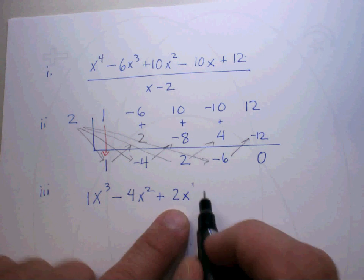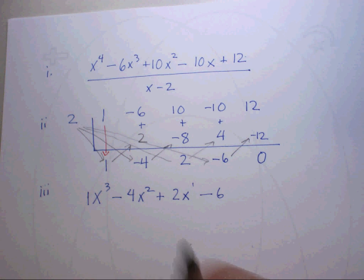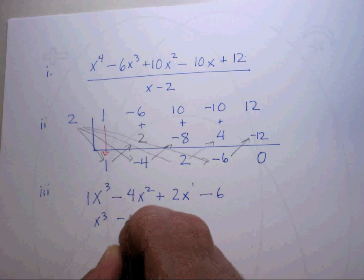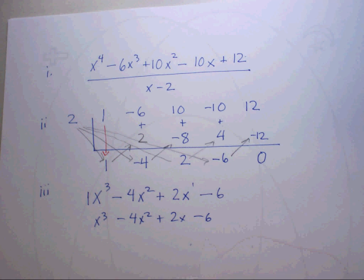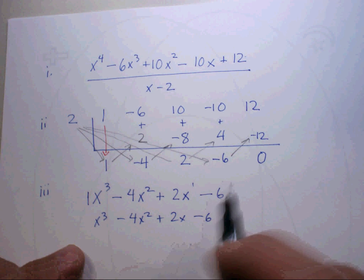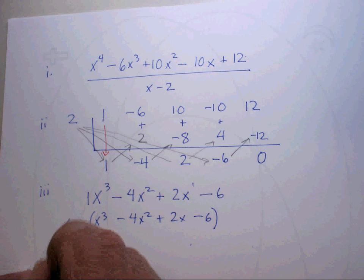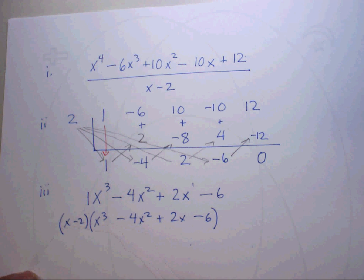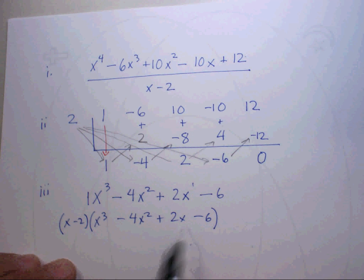Minus 4x squared, because it's 1 lower than x cubed. Put the negative 4 there. That would be plus 2x to the 1st. And then minus 6. This x cubed minus 4x squared plus 2x minus 6 is your answer.